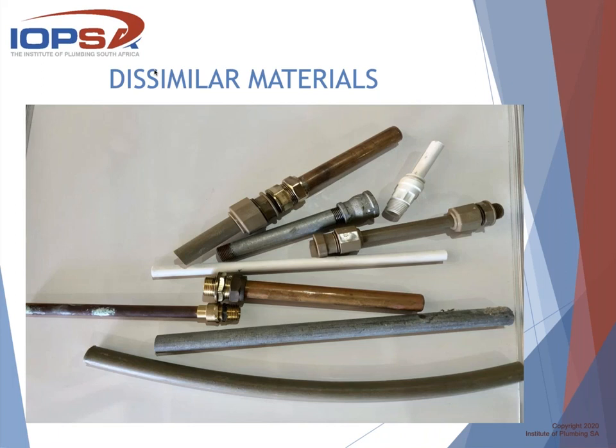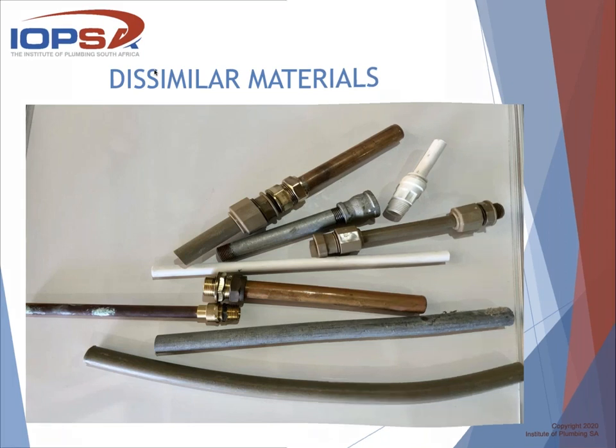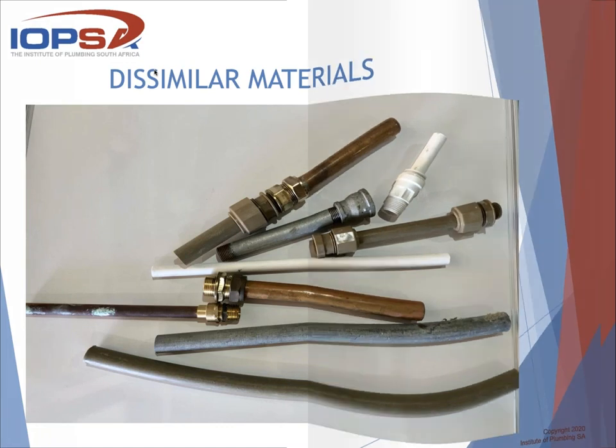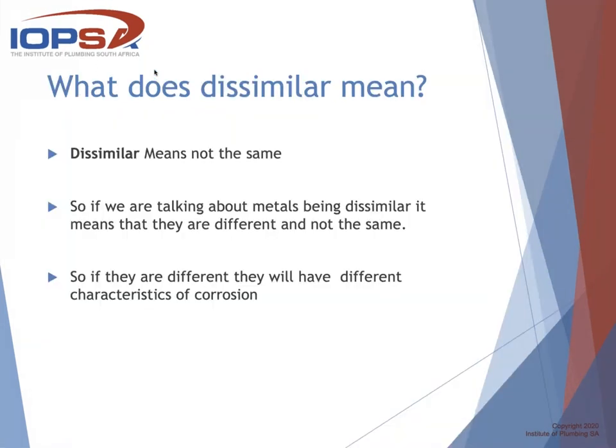So what does dissimilar mean? It means not the same. If we're talking about metals being dissimilar, it means they are different. And if they are different, they will have different characteristics of corrosion as well.